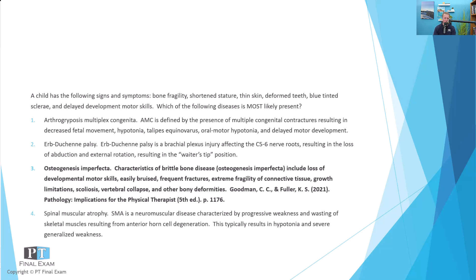It's important to review the incorrect answers as well — a good strategy when going through practice questions. Arthrogryposis multiplex congenita, or AMC, is the presence of multiple congenital contractures. The biggest finding is significant contractures, especially of the muscular and connective tissue — not so much the bony or skeletal tissue. These individuals typically have severe contractures, hypotonia, talipes equinovarus or clubfoot, oral motor hypotonia, delayed motor development, and significant muscular issues, but not the bone issues seen in osteogenesis imperfecta.